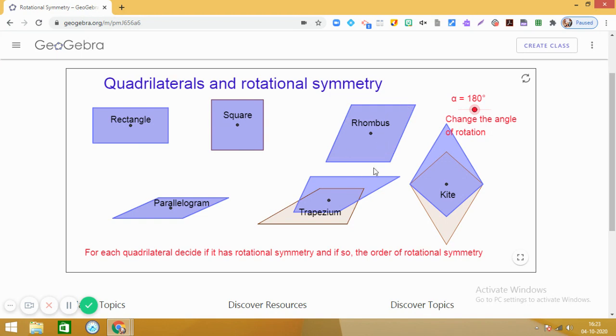Oh, wow. Rhombus is also getting set at an angle of 180 degrees and parallelogram also. So, we see that in a rectangle, the angle of rotation is 180 degrees. But for a square, if you remember, after a turn of 90 degrees, we got a square.